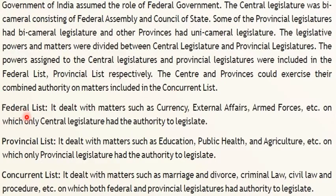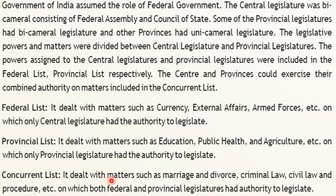Details about the three lists: The Federal List dealt with matters such as currency, external affairs, and armed forces, on which only the central legislature had the authority to legislate. The Provincial List dealt with matters such as education, public health, and agriculture, on which only the provincial legislature had authority to legislate. The Concurrent List dealt with matters such as marriage and divorce, criminal law, civil law and procedures, on which both the federal and provincial legislatures had authority to legislate.